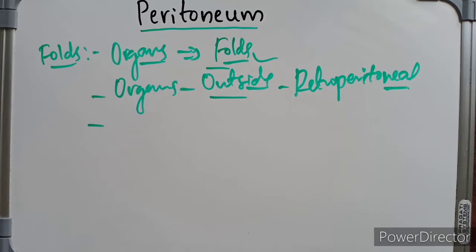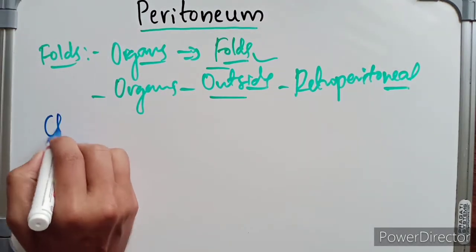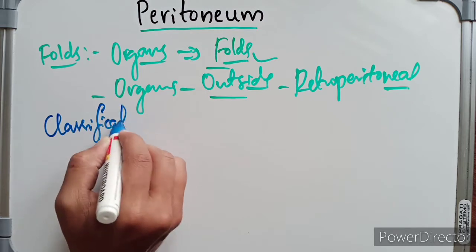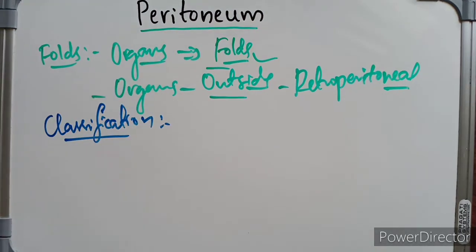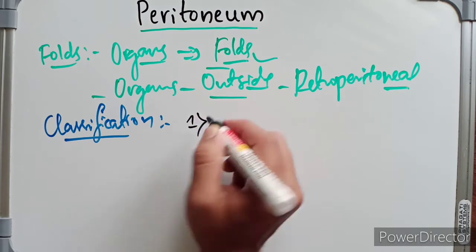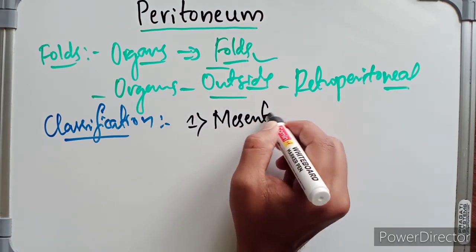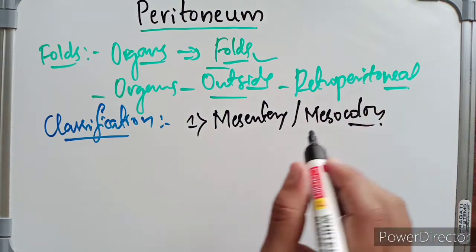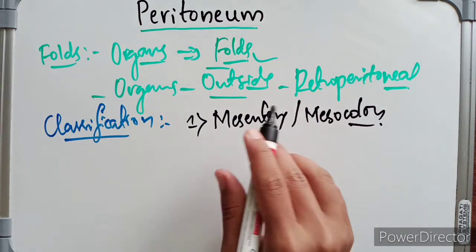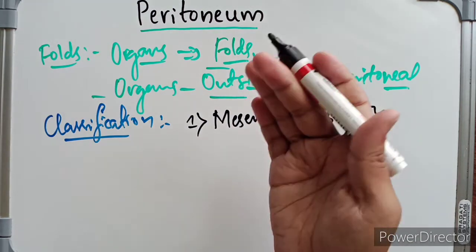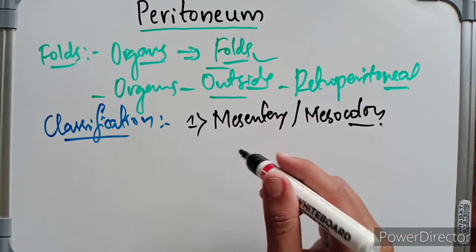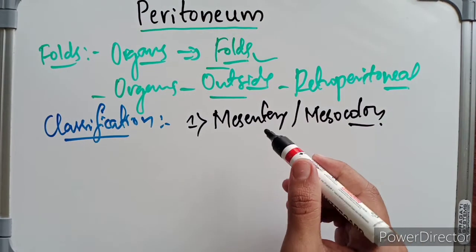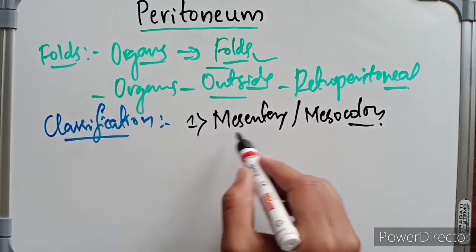The peritoneal folds are classified into three types. The first is the mesentery or mesocolon. The fold suspending the small intestine is called the mesentery, and the fold suspending the colon is called the mesocolon.